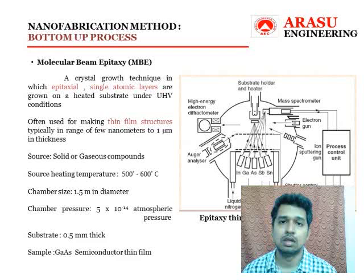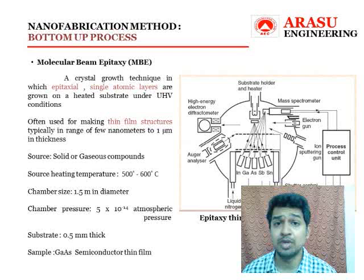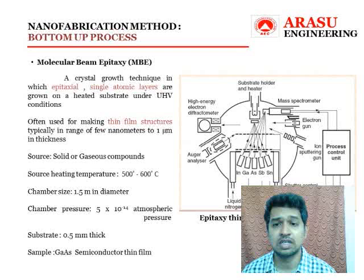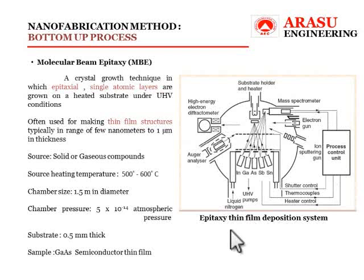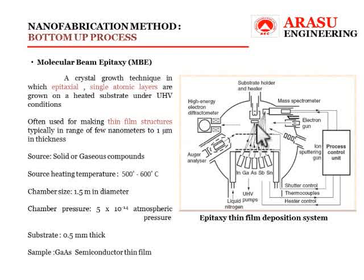Now we look at fabrication techniques based on the bottom-up approach. The first is molecular beam epitaxy, a crystal growth technique where epitaxy is grown in single atomic layers on a heated substrate maintained under ultra-high vacuum conditions. The experimental setup includes a substrate holder and heater to maintain the substrate temperature, and an ion sputtering gun to clean the substrate surface before deposition by sputtering ions across the surface.